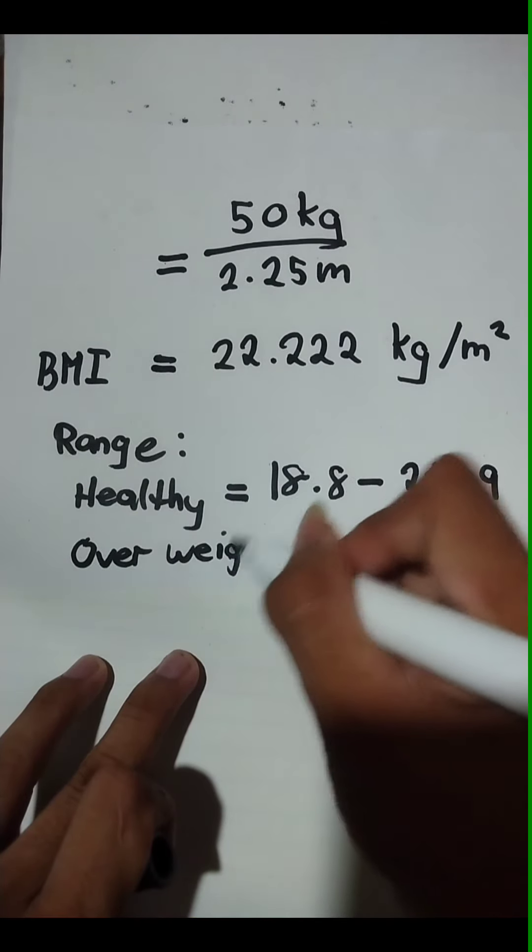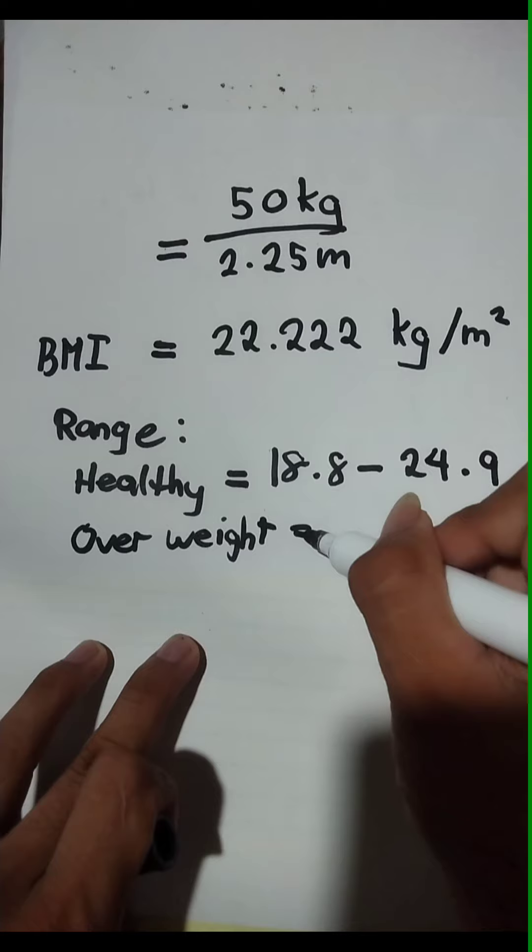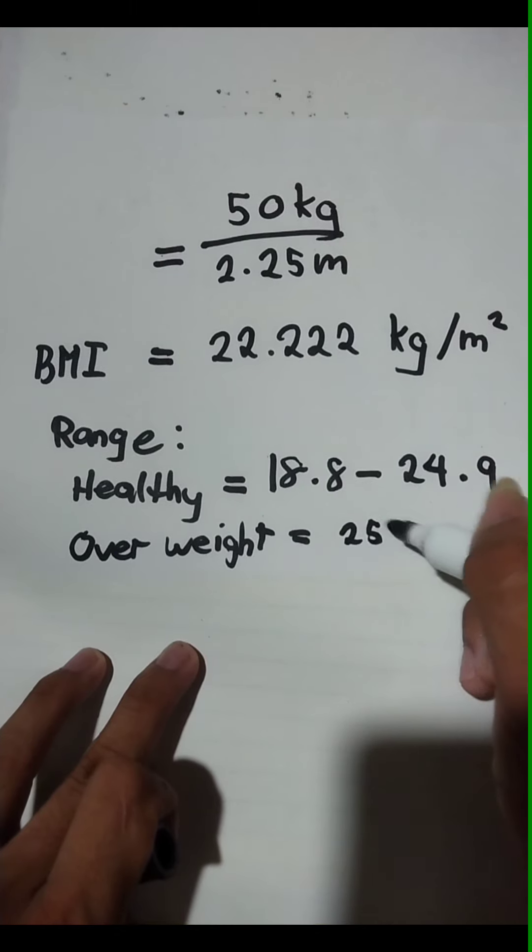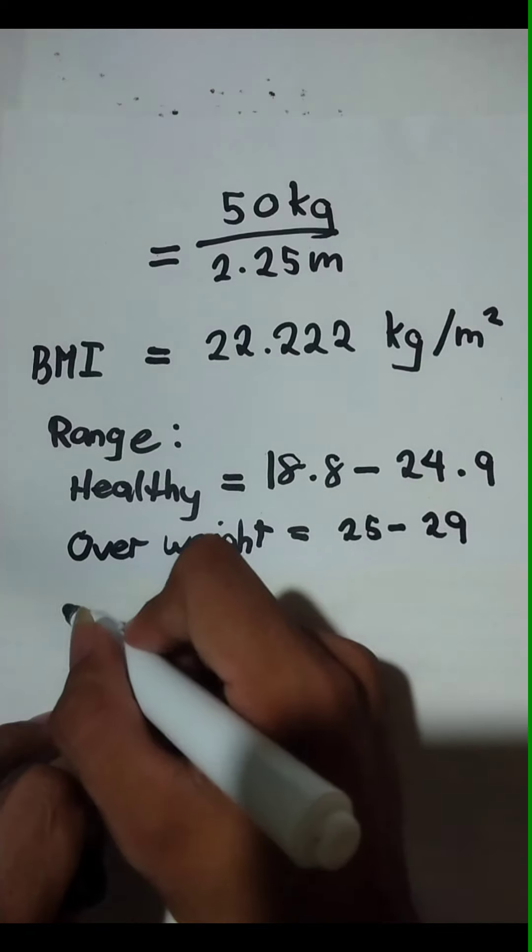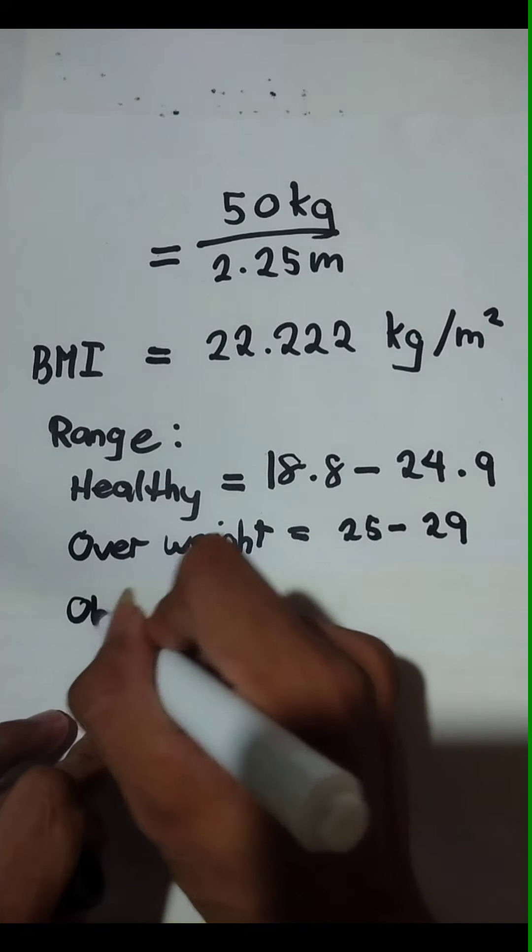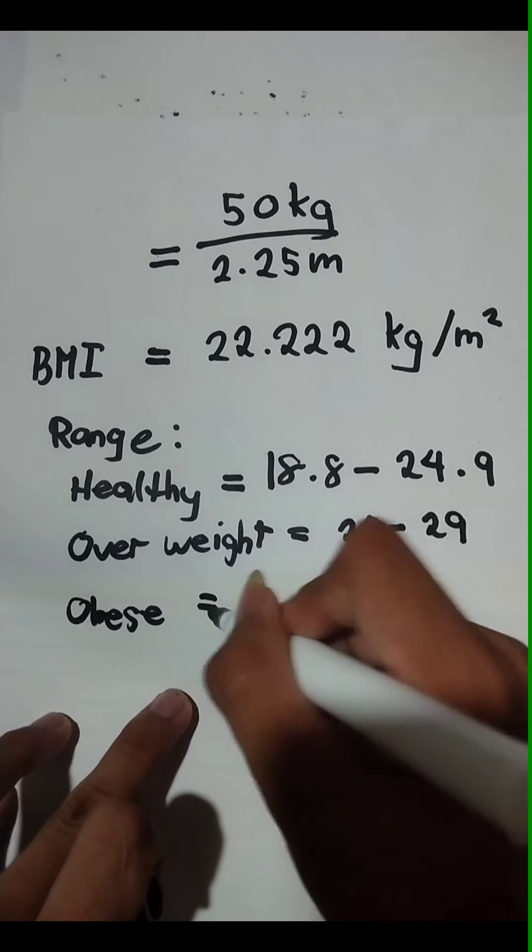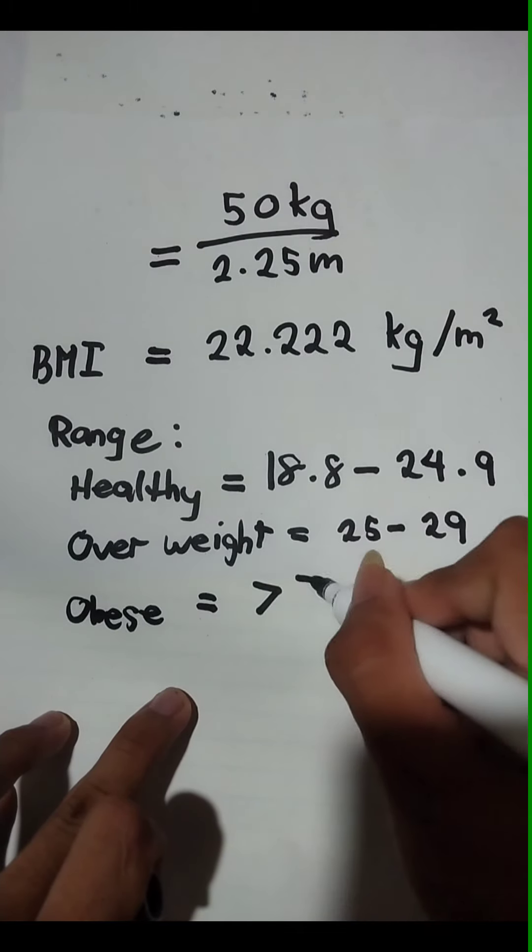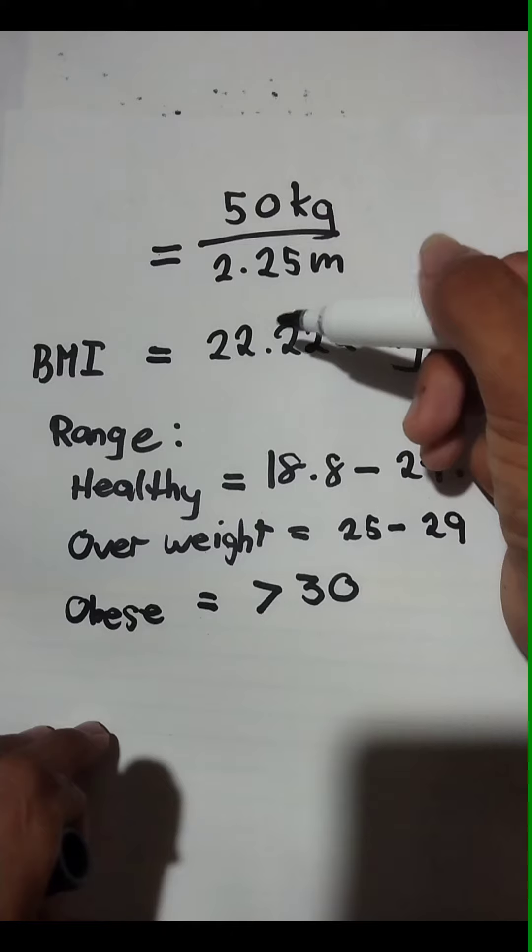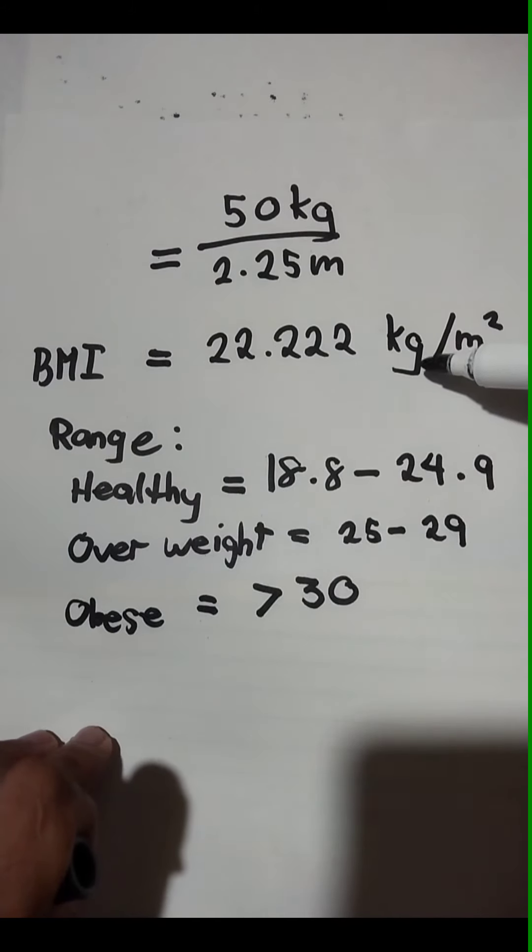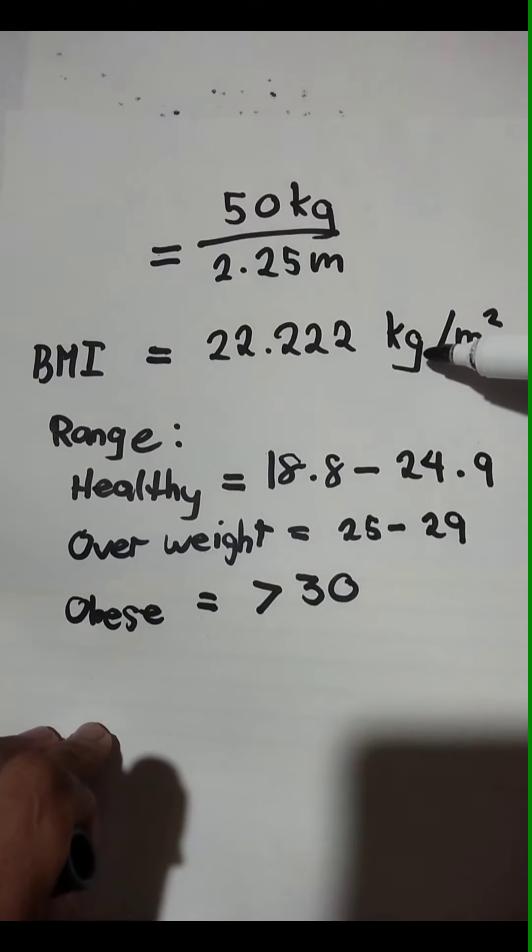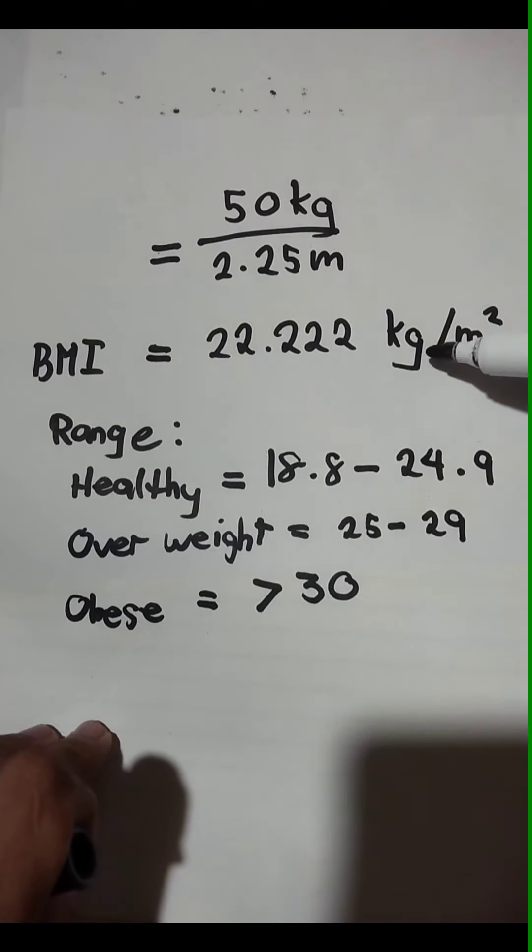And the range of overweight is 25 to 29, and the range of obese is greater than 30. So I can say that my BMI is healthy because 22.222 is in the range of 18.8 to 24.9.